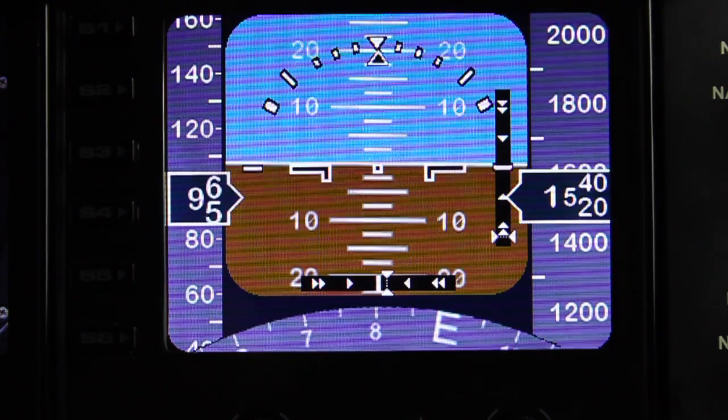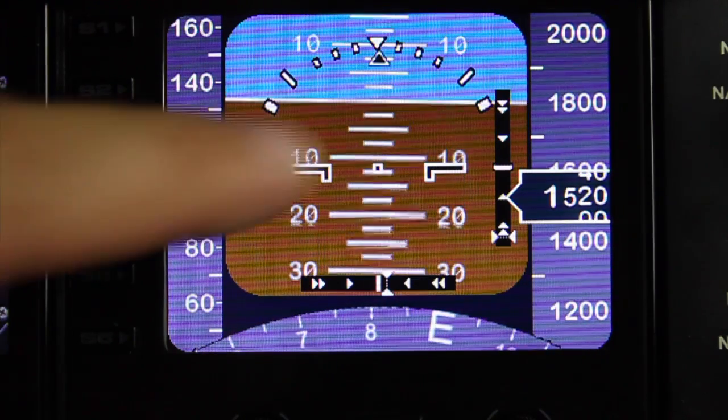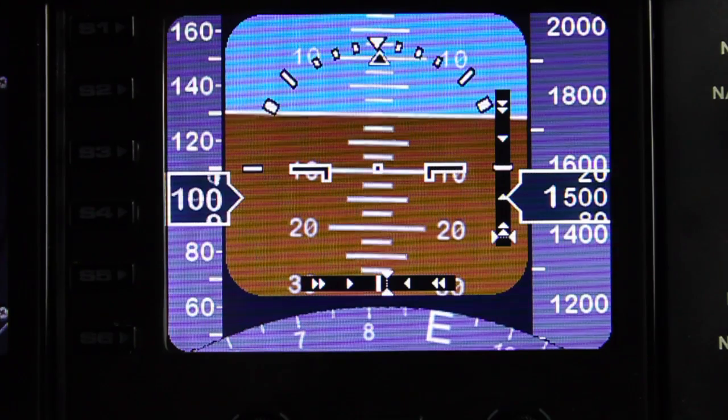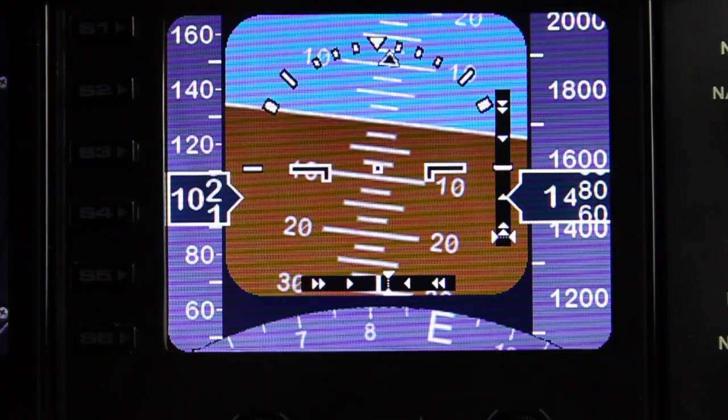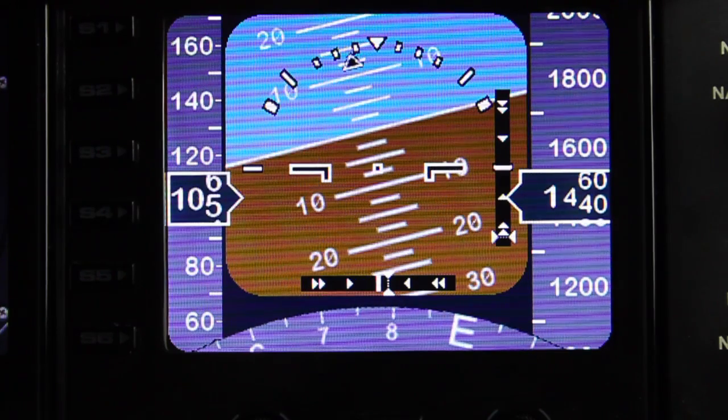We also have the attitude indicator. As we turn left and right, as you can see the attitude changes accordingly, showing the artificial horizon.